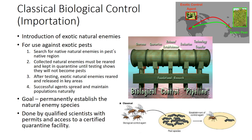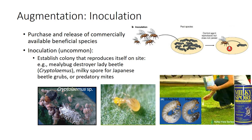Only specially trained university and government personnel can carry out importation programs. Augmentation involves supplementing the numbers of naturally occurring biological control agents with releases of laboratory-reared or field-collected natural enemies. Because it is so much more expensive, augmentative approaches are usually attempted only when importation and conservation techniques are not promising.